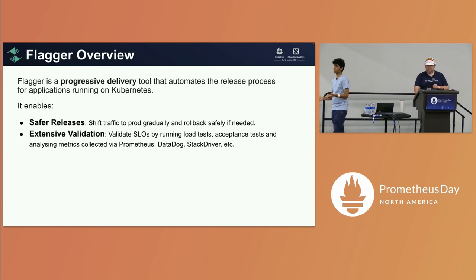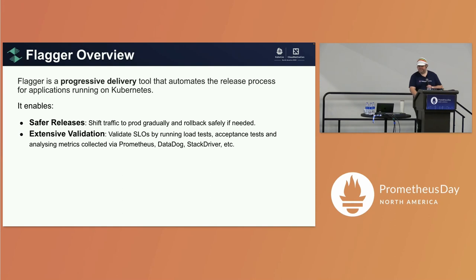Flagger supports extensive validation — you can validate your SLOs using a bunch of tools, using Prometheus for the demo. It also has an extensive webhook mechanism which you can use to run load tests and various acceptance tests throughout every phase of the canary. So if you want to run different tests at 20% weight, or different tests when the new version is being promoted, Flagger allows for that.